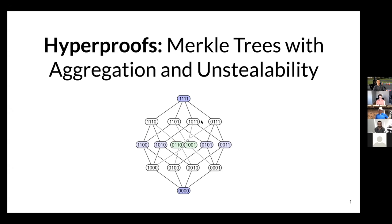Thanks Sergey, thanks everybody for joining. I want to talk about this new Merkle tree-like data structure that, unlike Merkle trees, has efficient proof aggregation and a new novel notion we call unstealability. We refer to the scheme as hyperproofs. For those familiar, the scheme is connected to the Boolean hypercube — hence the name — which you'll hopefully understand throughout the talk.